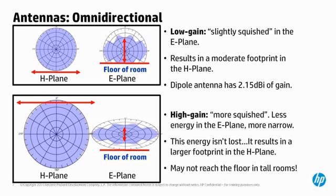Some manufacturers measure antenna gain in dBd, or gain as compared to a dipole antenna. Simply add 2.15 to convert to dBi, or subtract 2.15 from a manufacturer's dBd specification to get dBi. A high-gain antenna design is like pressing hard on our balloon — it covers more floor space in the horizontal direction, but the top and bottom has really been flattened. There are some high-gain omnidirectional antennas that have 5, 6, or even 14 dBi of gain. With that much gain, the RF energy might not even reach the floor in a high-ceiling warehouse or auditorium.